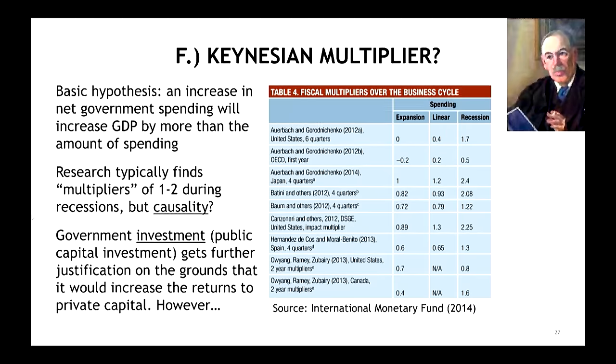There are a lot of studies that try to measure what the Keynesian multiplier is. The problem is it's really hard to do. These Keynesian interventions — big government increases in fiscal policy — tend to happen during a cyclical economic downturn. When the cycle reverses, you get increased growth, but you can't attribute it to the government spending. You don't know whether it would have happened anyway.